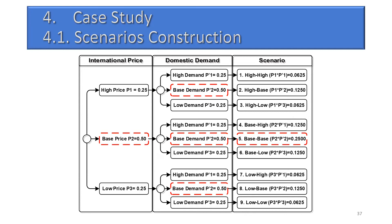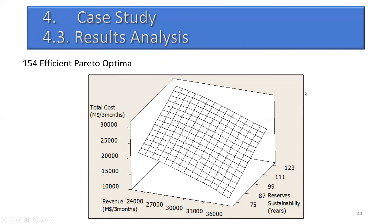This resulted in nine market scenarios combining international price and domestic demand levels — for example, high price/high demand, base price/high demand, and so on — each with calculated probabilities. After filling the model with these parameters and the network, we applied the augmented epsilon-constraint approach and generated 154 efficient Pareto optima. Efficient Pareto solutions are feasible and actionable, with some better in cost, some in depletion rate.